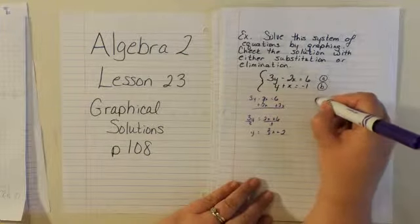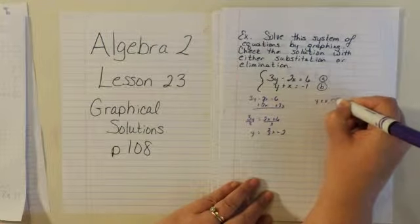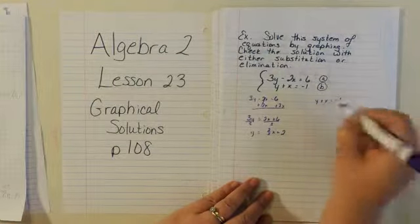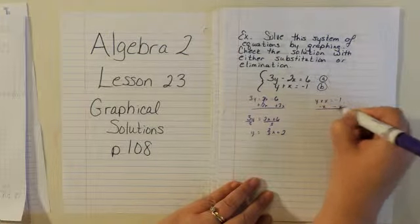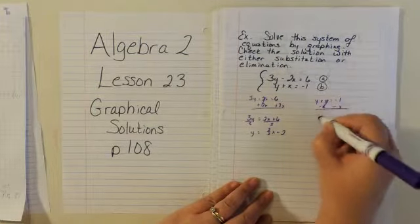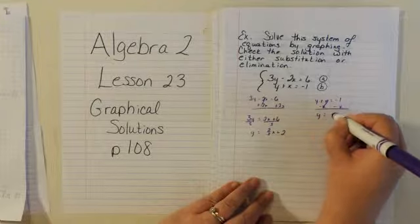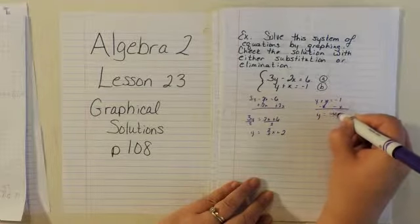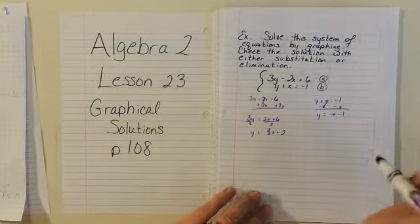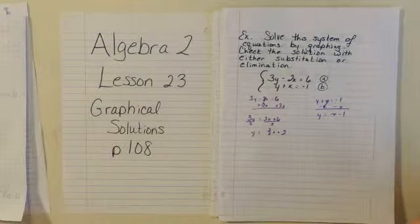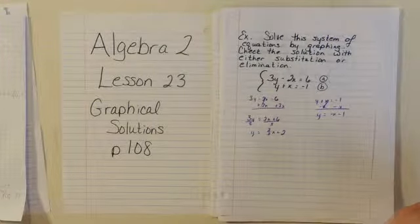Over here we have y plus x equals negative 1. Remove the x to the other side, and so we have y equals negative x minus 1. There's no coefficient of y, so we're done with this one.